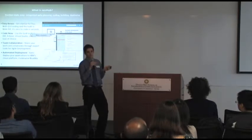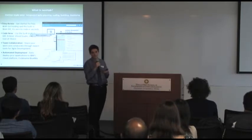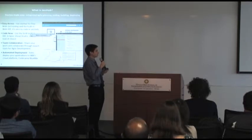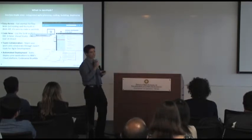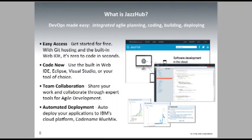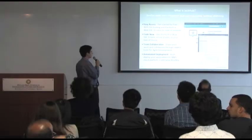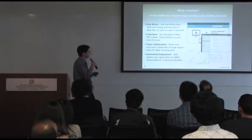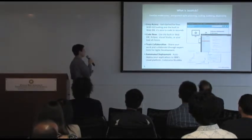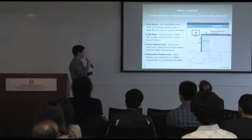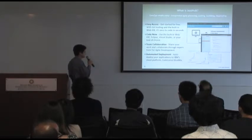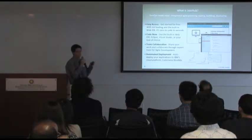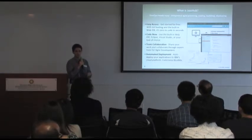I happened to be a Bluemix beta member and had seen how they were advertising quick development. I looked more into it, and it turned out to be a hugely important part of my project — something I use all the time for my code today. It's pretty much all centered on JazzHub. JazzHub is essentially a Git repository, or they have their own SCM method as well, where you can store your code. But it also has a huge suite of tools, including a built-in web IDE. You can also automatically deploy your code to Bluemix, and it will be out on the cloud for everyone to use.